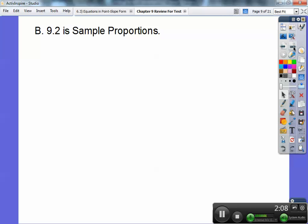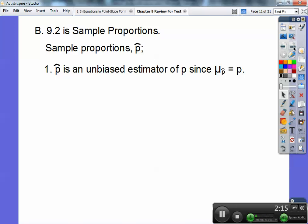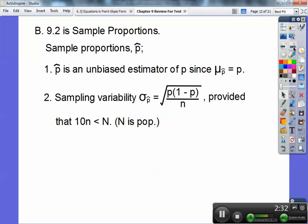So 9.2 is sampling proportions. Sample proportions, which is p hat. p hat is an unbiased estimator of the population proportion p, since the average, the mu of p hat is equal to p, just like in the first part right there that we just covered. Okay, sampling variability. Now this is when it's sampling proportions. I had some students ask, when do we use this formula or the other one, when it talks about proportions or when it talks about means.